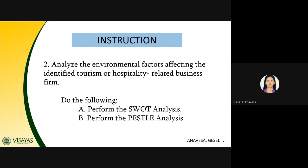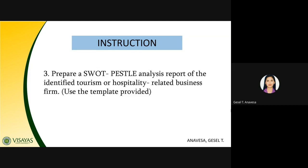You will not be able to follow these instructions if you are not familiar with module 2.1, so you really have to study. After analyzing, you're going to prepare a SWOT and PESTLE analysis report of the identified tourism or hospitality-related business firm. I have prepared a template to guide you on the content and subtopics you need to include in your report. You will identify the firm, gather information regarding PESTLE and the internal and external environment, conduct the SWOT and PESTLE analysis, then transform all the gathered data into an analysis report for submission.